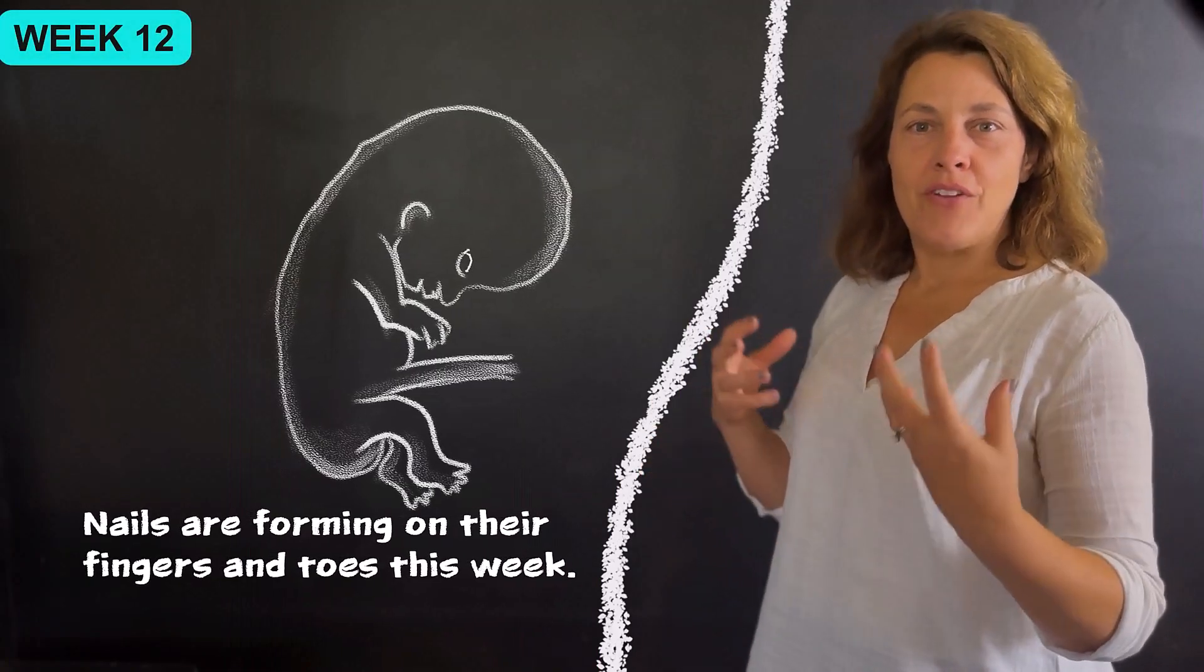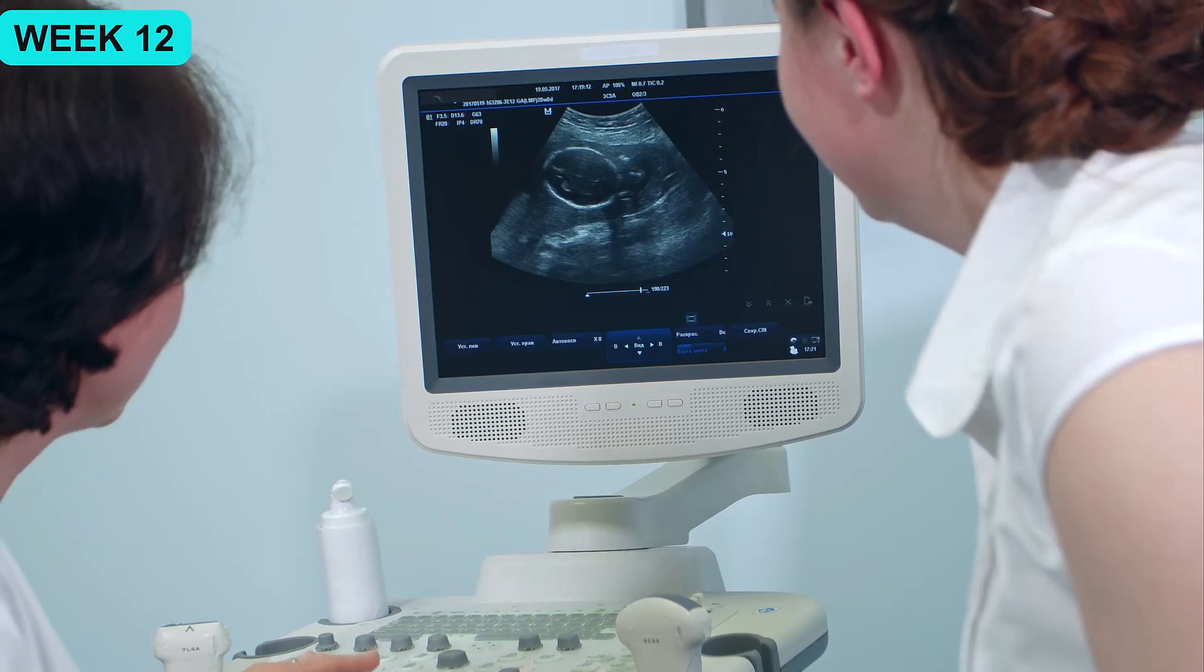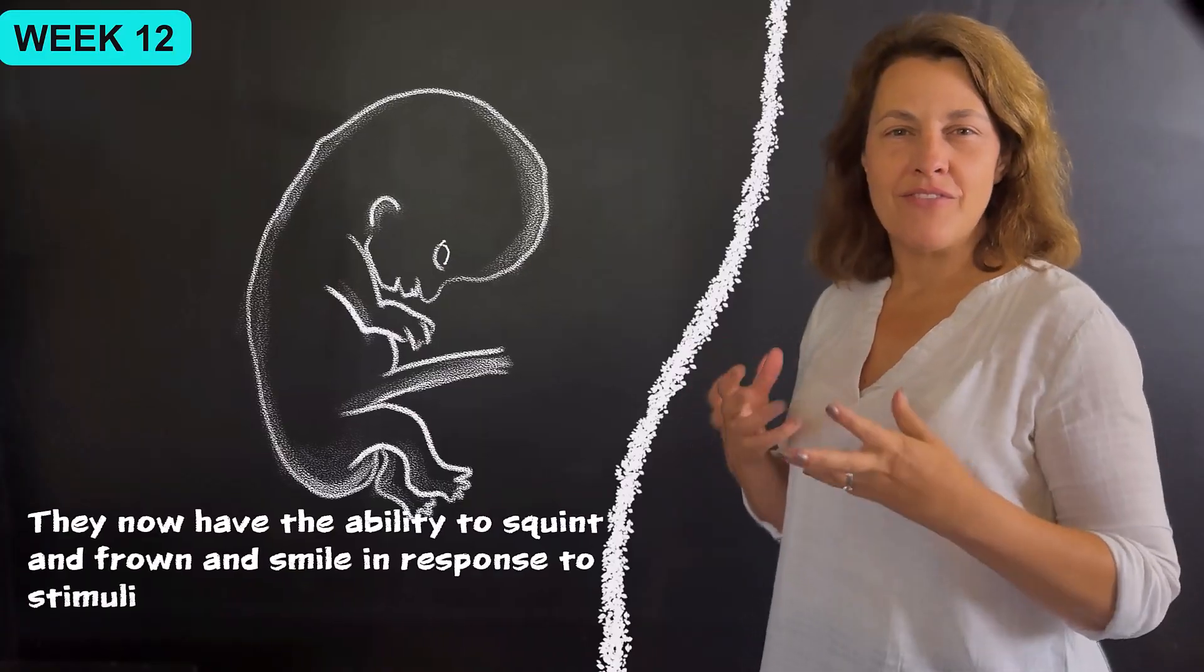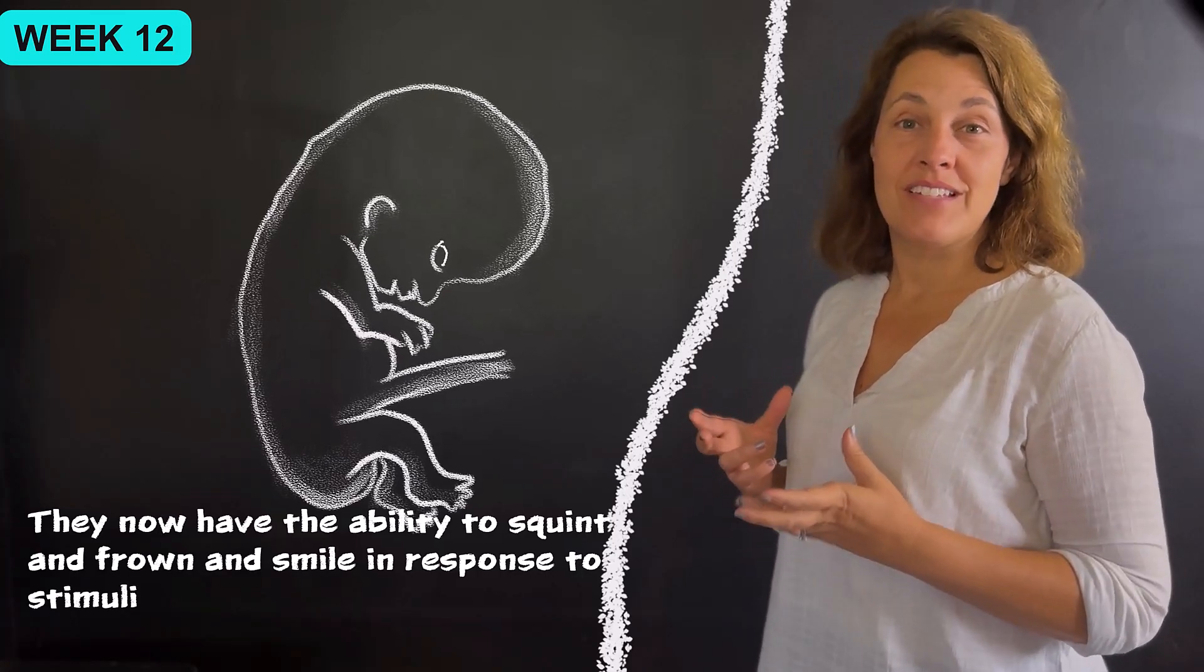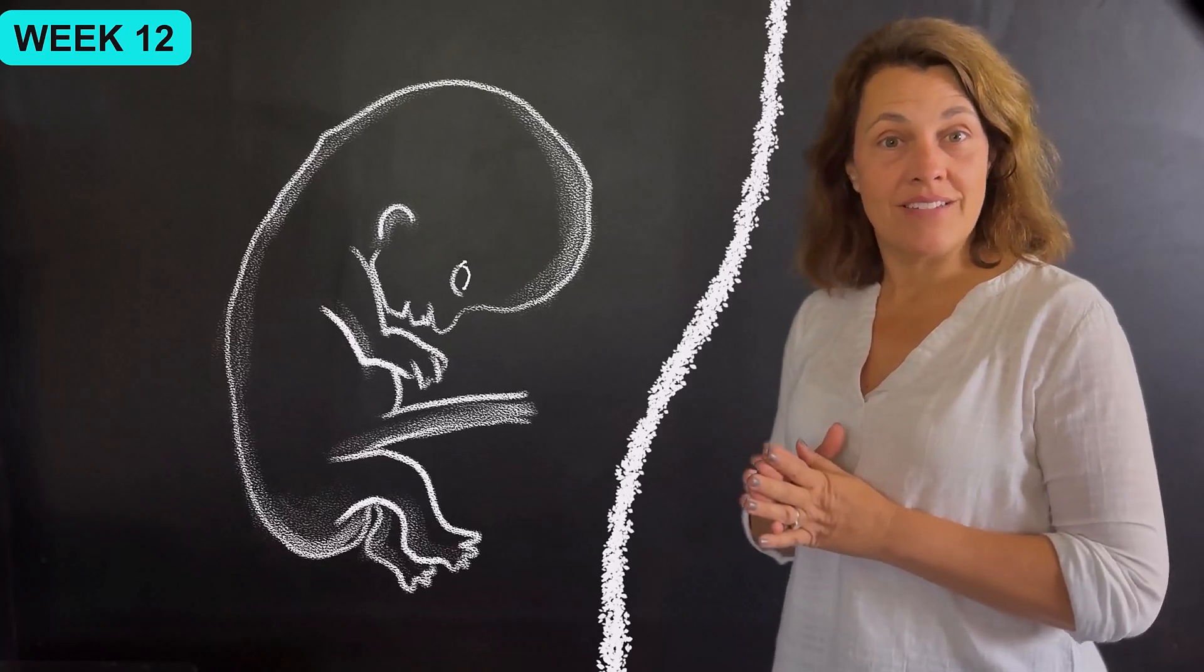Nails are forming on their fingers and toes this week. Another cool development at 12 weeks is with their facial features. They now have the ability to squint and frown and smile in response to stimuli, and their facial profile is more defined at 12 weeks.